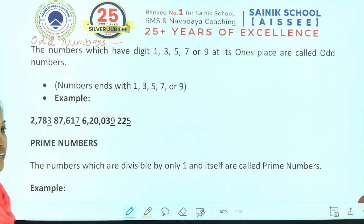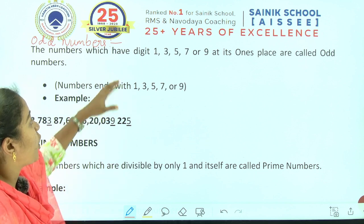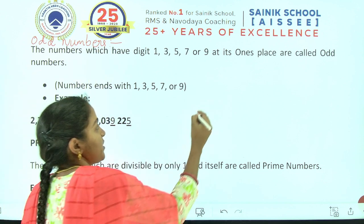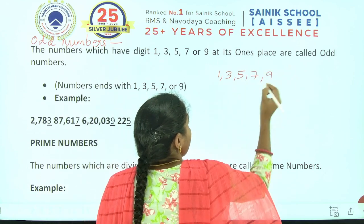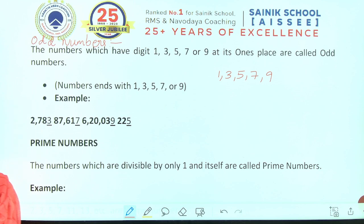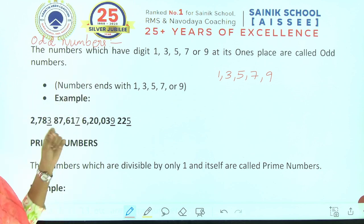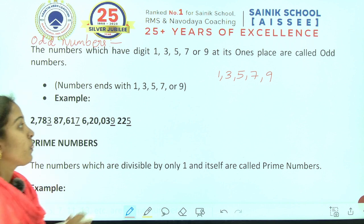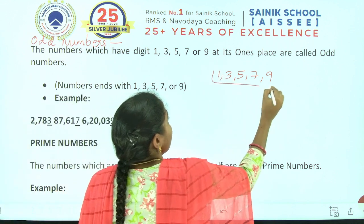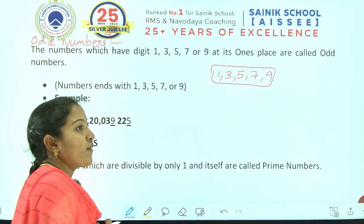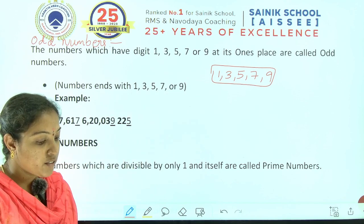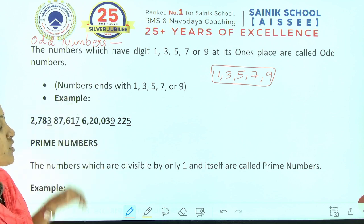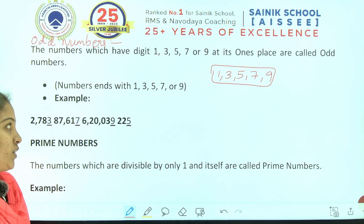The next type is odd numbers. Odd digits are 1, 3, 5, 7 and 9. The definition is similar to even numbers, but the digit should be 1, 3, 5, 7 or 9. If the digit 1, 3, 5, 7, or 9 is at the ones place, then those numbers are called odd numbers.